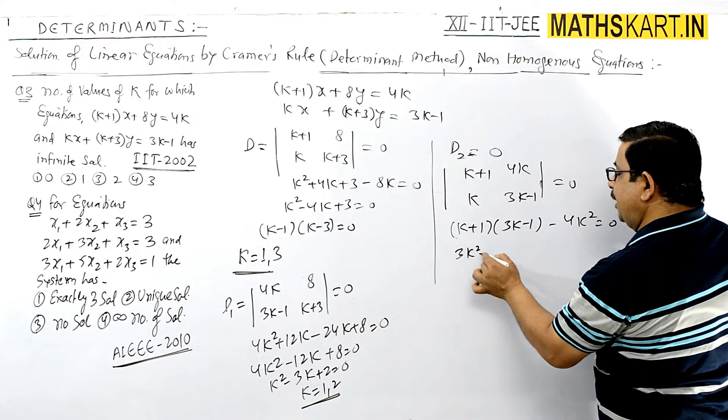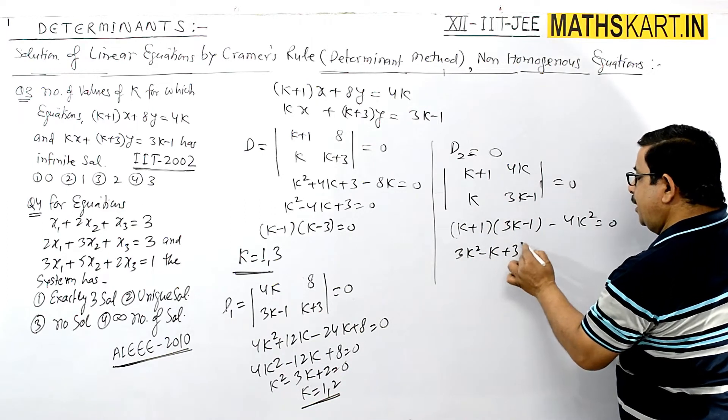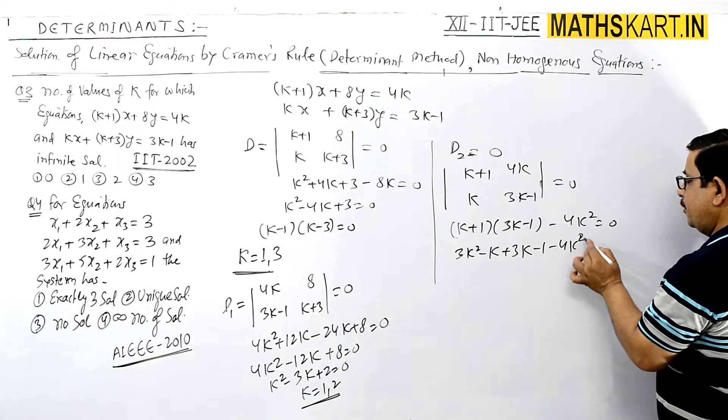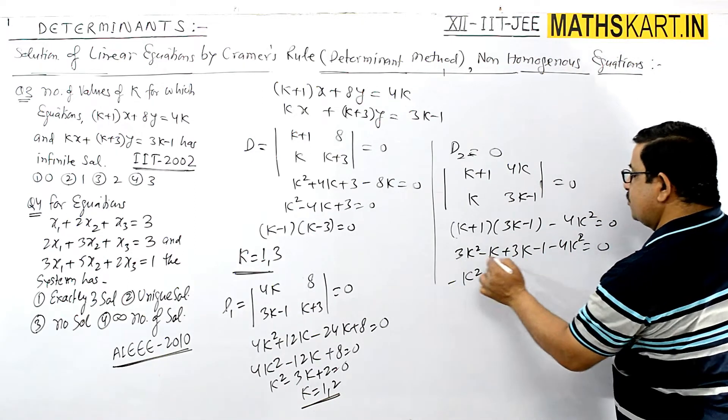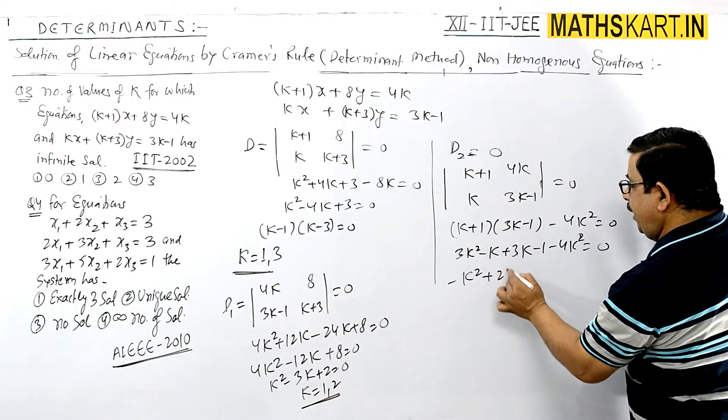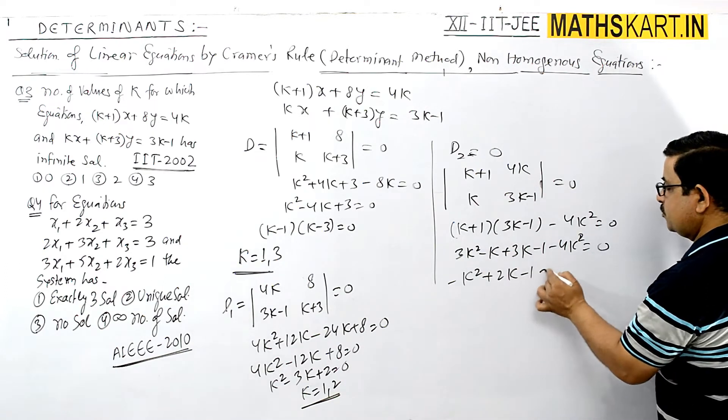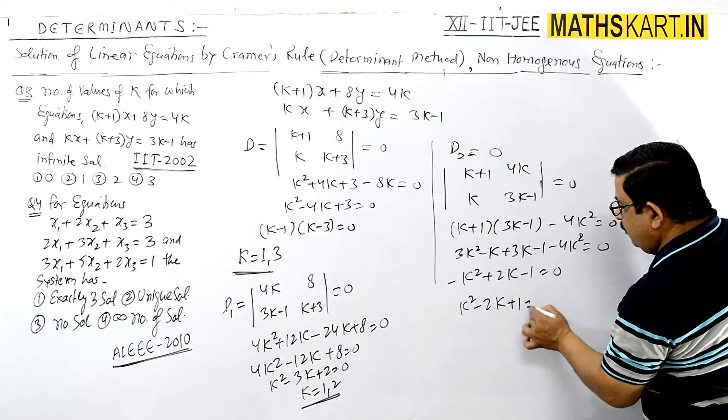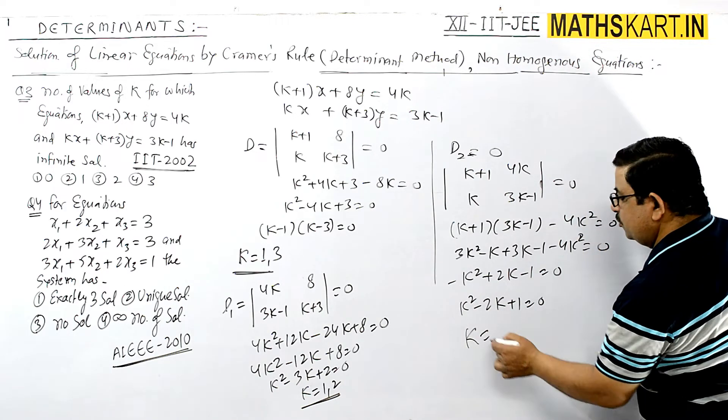This gives 3k² - k + 3k - 1 - 4k² = 0, which simplifies to -k² + 2k - 1 = 0, or k² - 2k + 1 = 0. This gives k = 1 as a repeated root. We need to find the common value of k from all three conditions.